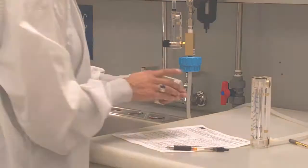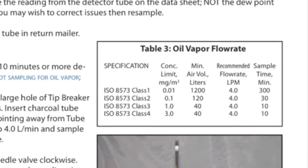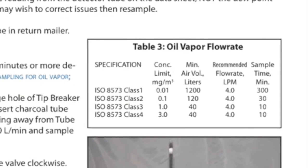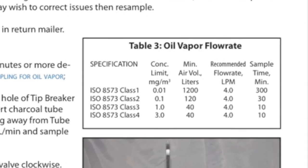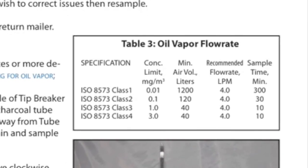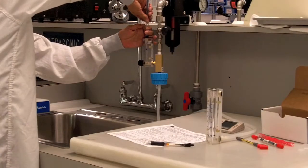Adjust the flow rate to 4 liters per minute and begin the third timer. Depending on the purity class you have selected, this test will take either 10, 30, or 300 minutes.